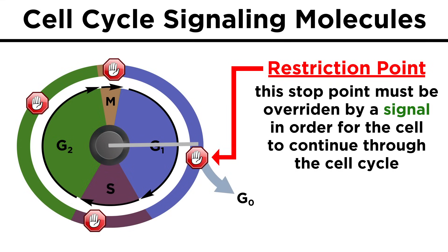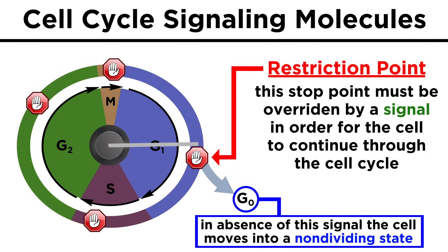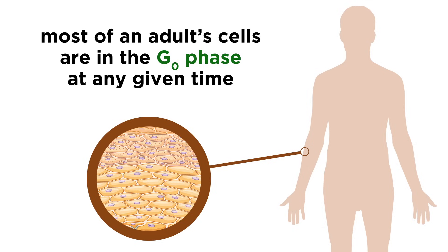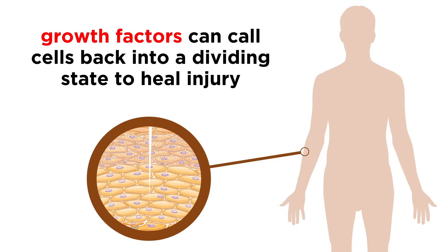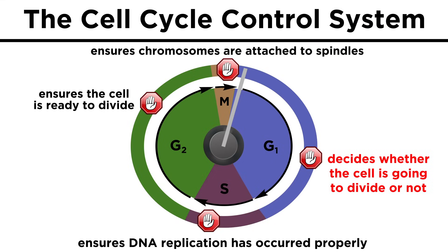There is also a checkpoint during the G1 phase called the restriction point. This is a stop point that must be overridden by a signal in order to continue to the rest of the cycle. In the absence of this signal, the cell remains in the G1 phase or moves into the G0 phase, which is a non-dividing state. Most of our cells are in the G0 phase at any given time, but these can be called back into the cell cycle by external signals like growth factors, which can be released during injury to stimulate cell growth to heal the wound. So we can think of the G1 checkpoint as the primary point where the cell determines whether it will divide or not. The third checkpoint is in the M phase, and it governs the separation of sister chromatids during mitosis.